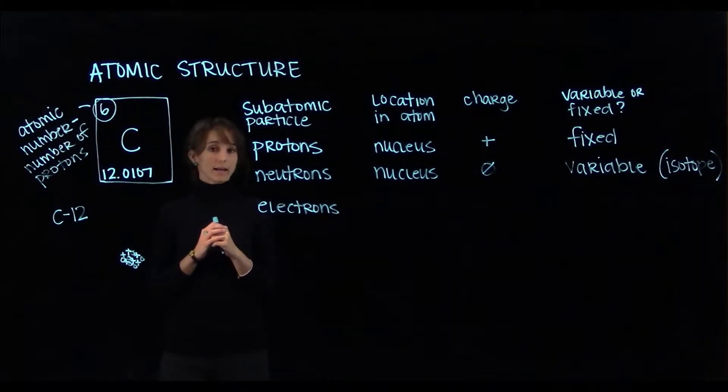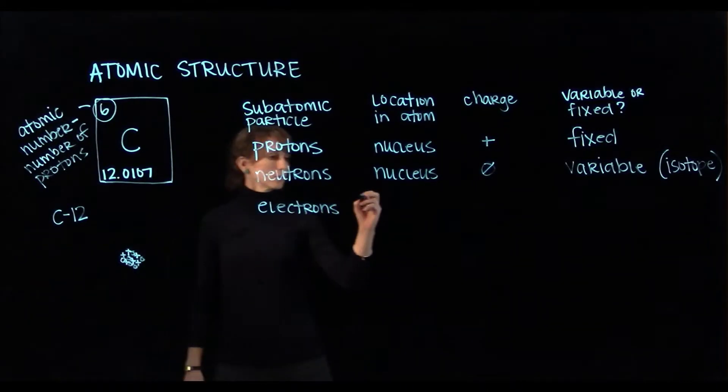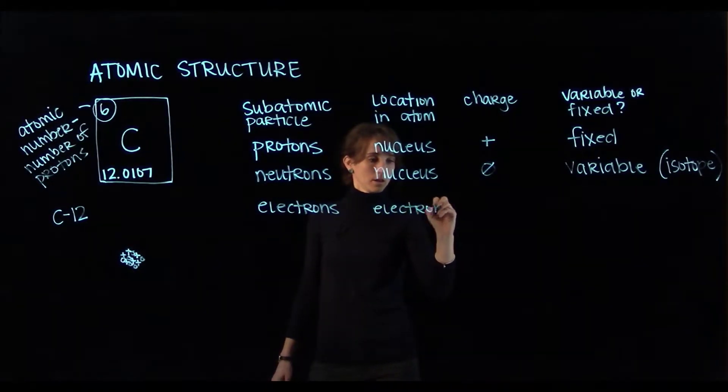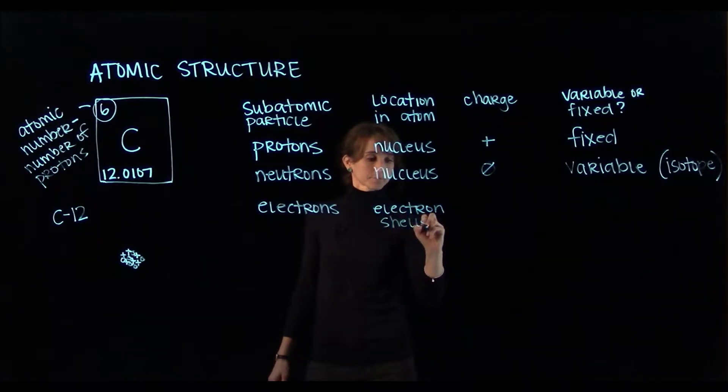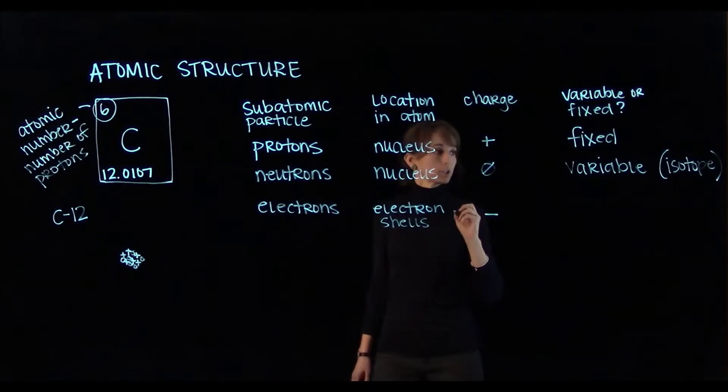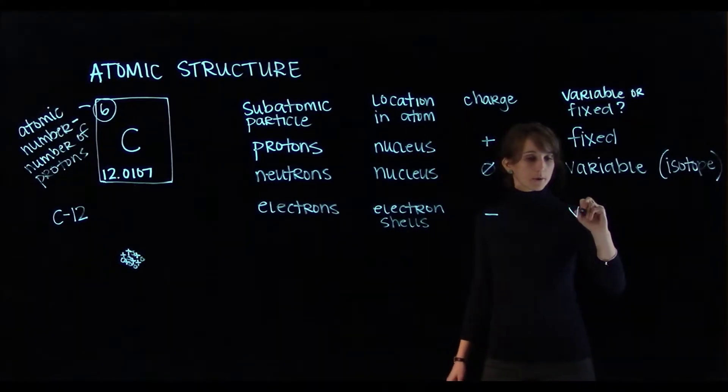Now we need to add the electrons. Electrons are located in electron shells that orbit the nucleus. Electrons have a negative charge and their number can vary.